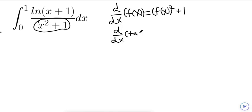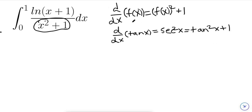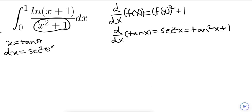The derivative of tan(x) is equal to sec²(x), and if you remember your identities, this is basically the same thing as tan²(x) + 1. So we found a function we should substitute in. If we let x = tan(θ), we get dx = sec²(θ) dθ, which since sec²(θ) = tan²(θ) + 1, equals (tan²(θ) + 1) dθ.